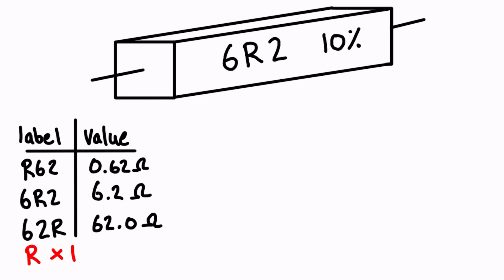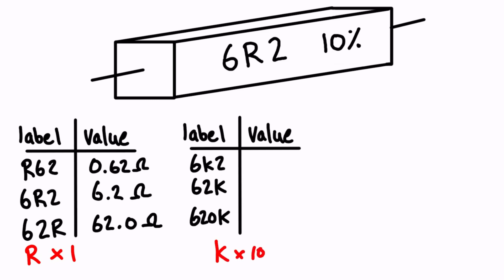Okay, let's try this again with the letter K, and the K is a multiplier of a thousand. So when we look at the top one here, 6K2, the K is also going to indicate the place of the decimal. So we're going to have 6.2 times 10 to the 3, or times a thousand ohms. We could also rewrite this as 6.2 kilo ohms if we wanted to.